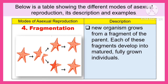Another mode of asexual reproduction is fragmentation. It is where a new organism grows from a fragment of the parent. Each of these fragments develops into matured, fully grown individuals.